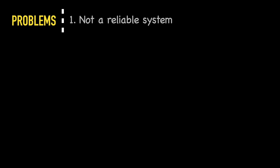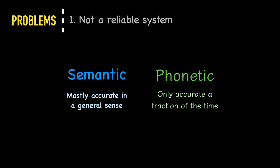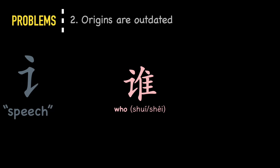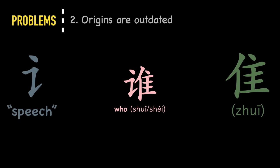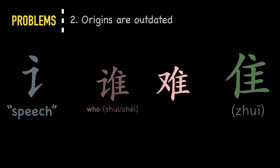But the problem is, you can't always rely on this system to interpret new characters you encounter. The semantic component is usually a good general classification of the character, but the phonetic component is only accurate a fraction of the time. The cherry-picked examples I used are only the best cases of semantic phonetic characters. The next issue is that they are sometimes outdated.